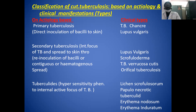The classification of cutaneous tuberculosis is based on etiology and clinical manifestation. Etiologically, primary tuberculosis involves direct inoculation of the bacillus into the skin, giving clinical types such as TB chancre. Secondary tuberculosis arises from an internal focus of TB spreading to the skin through re-inoculation, contiguous, or hematogenous spread; clinical types include lupus vulgaris, scrofuloderma, TB verrucosa cutis, and orificial tuberculosis.